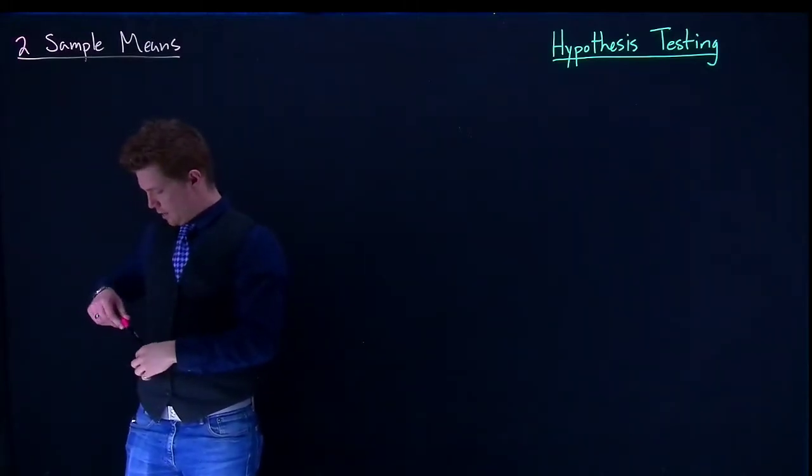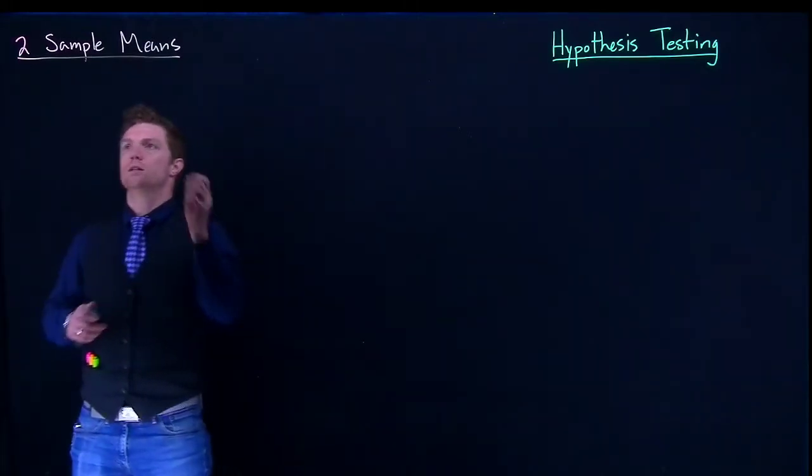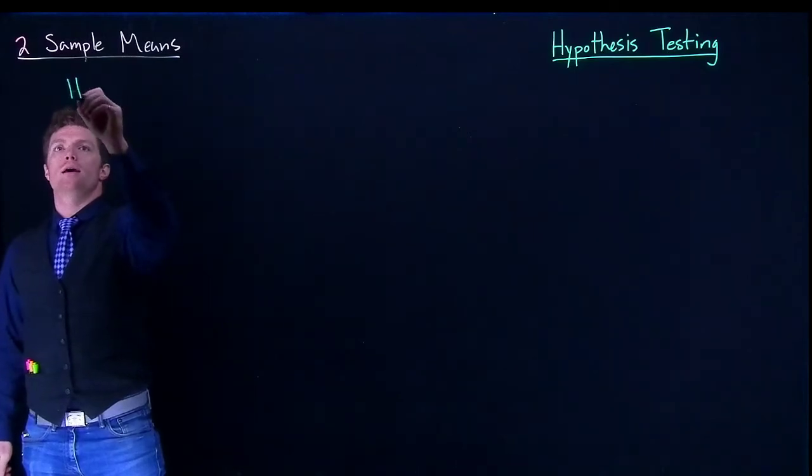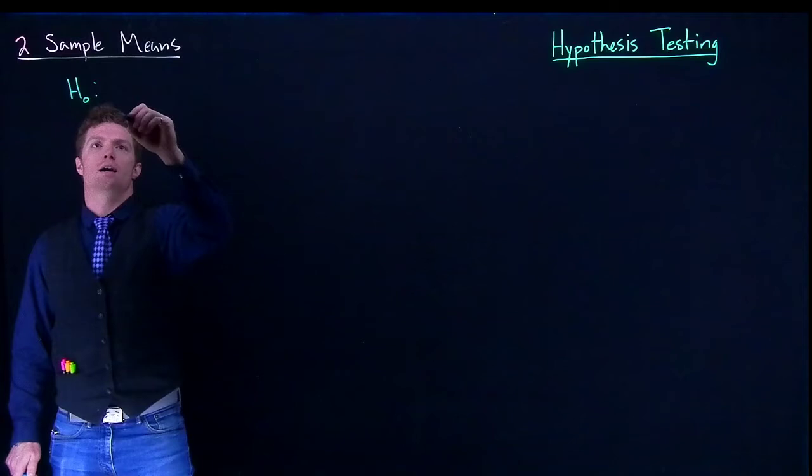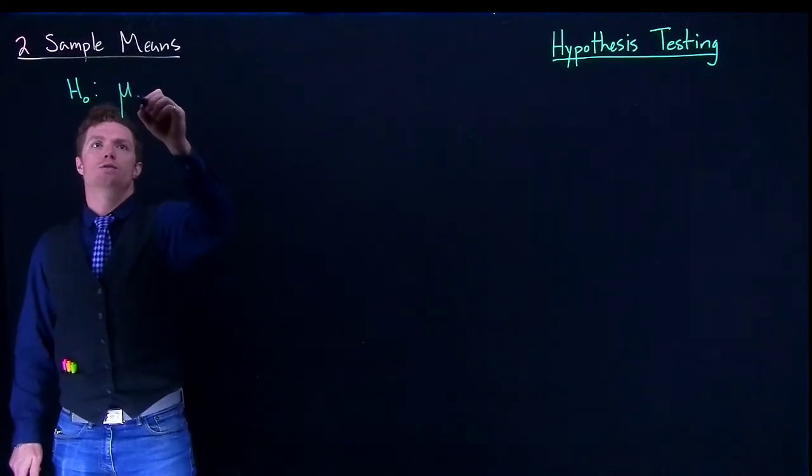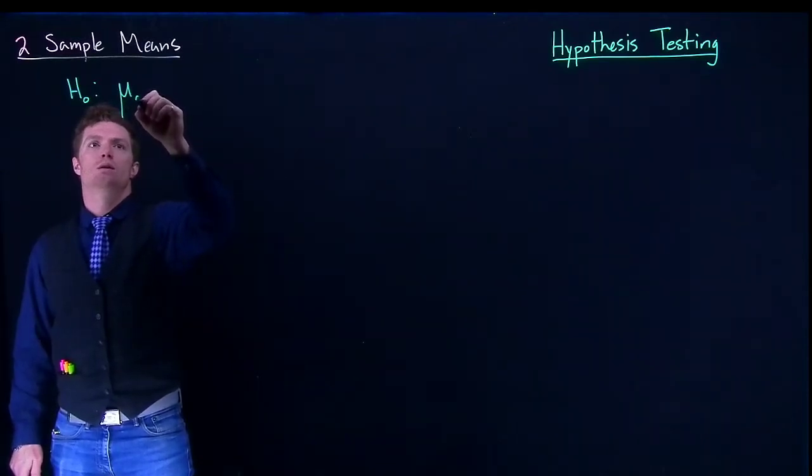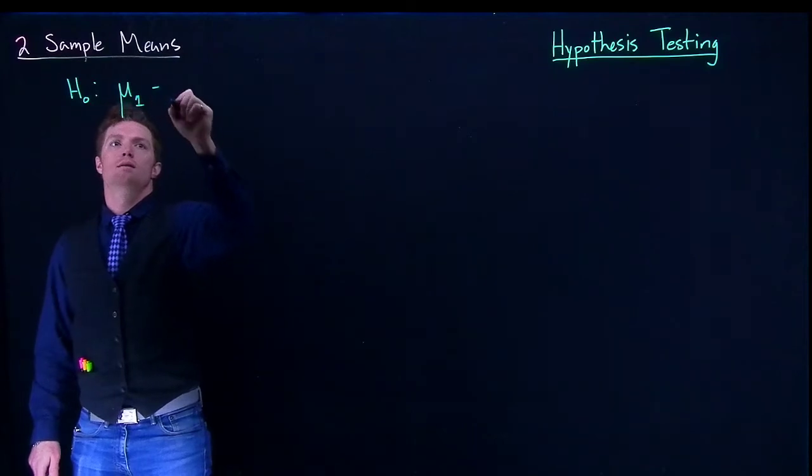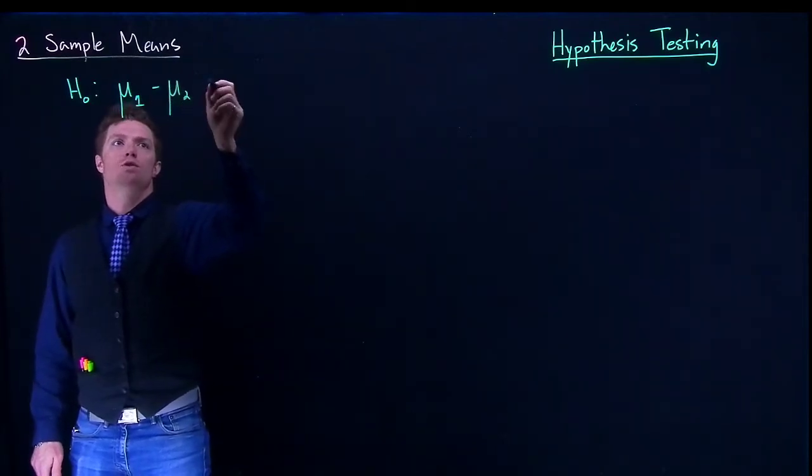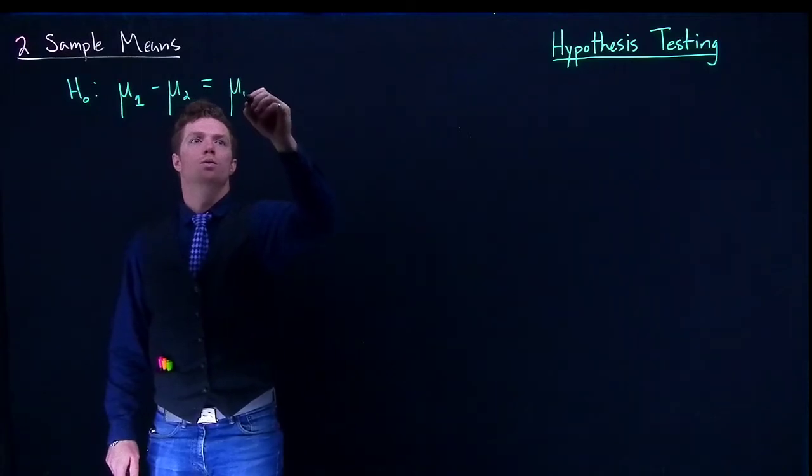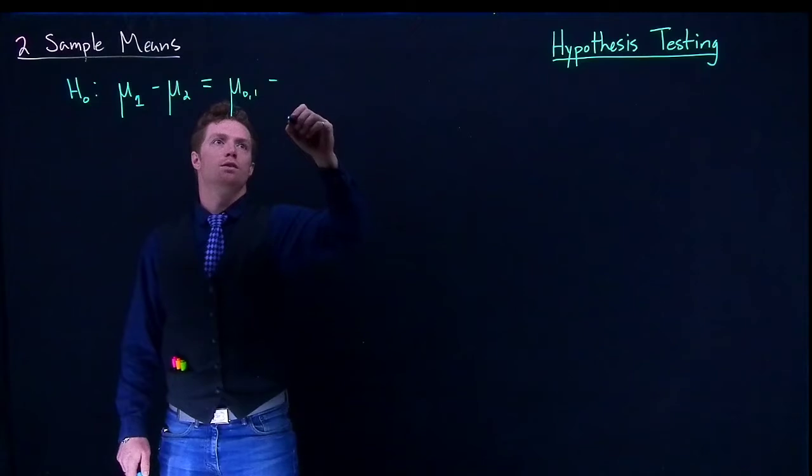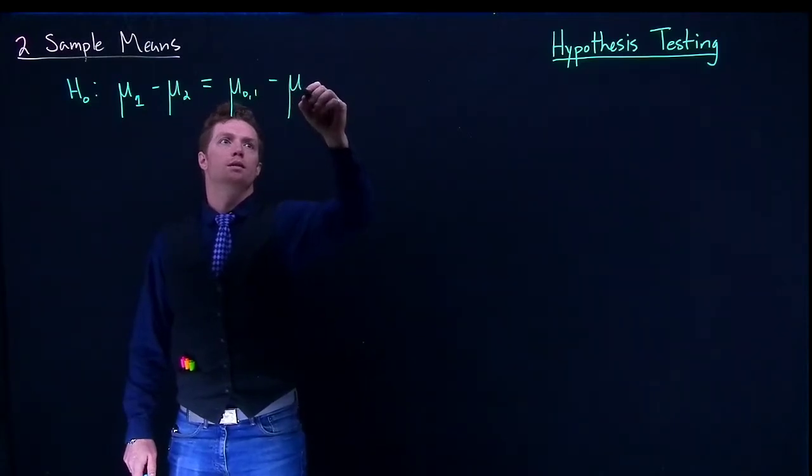As we did in our introduction, we know that our null hypothesis is technically this guy, where we're doing this mu1 minus mu2 is equal to mu naught 1 minus mu naught 2.